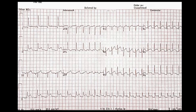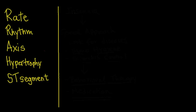What we're going to do here is go through our methodical method of interpreting EKGs so we can pick up all of these things and make a diagnosis. We'll go through this order: rate, rhythm, axis, hypertrophy, and looking at ST segments.